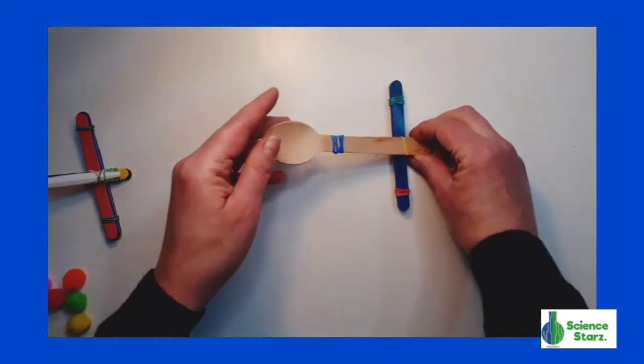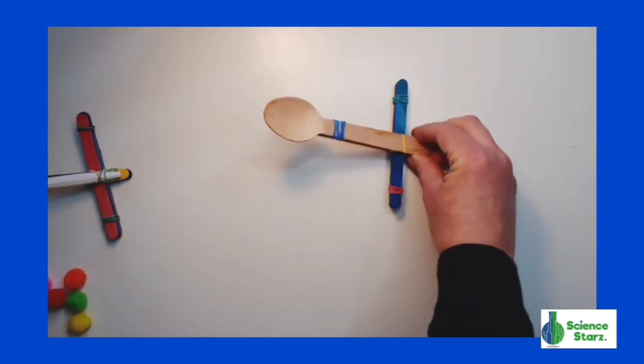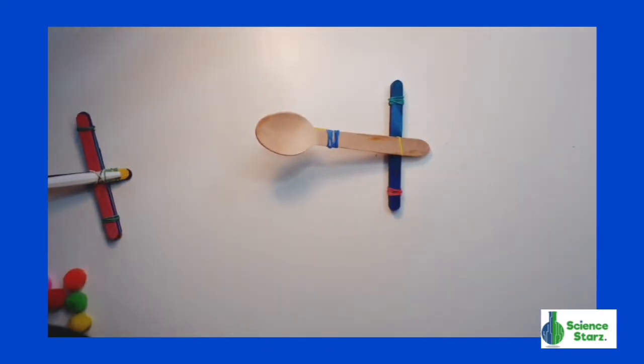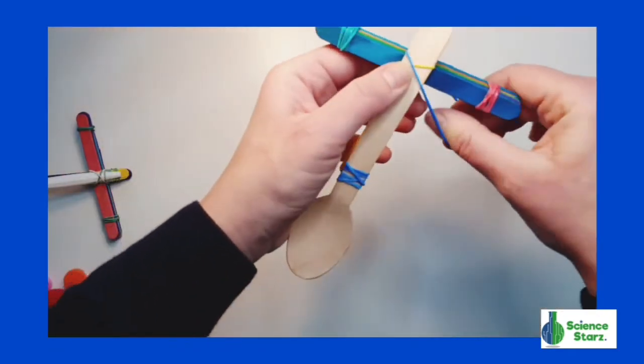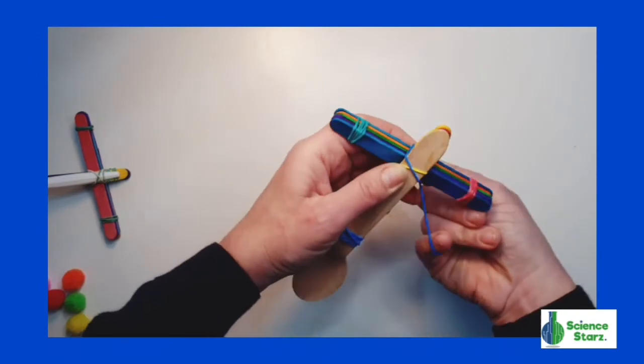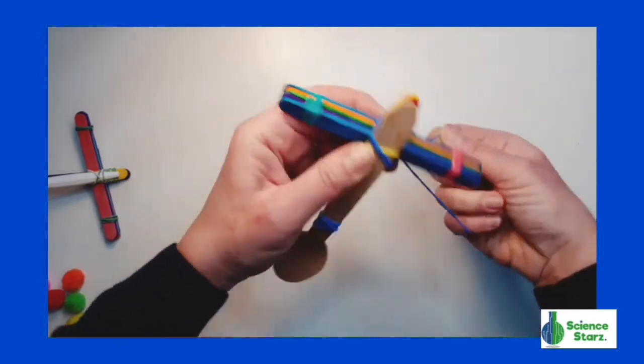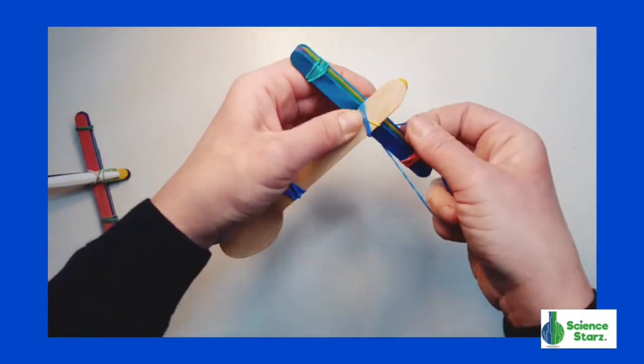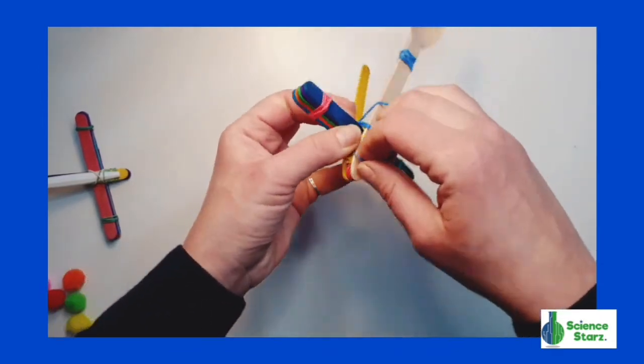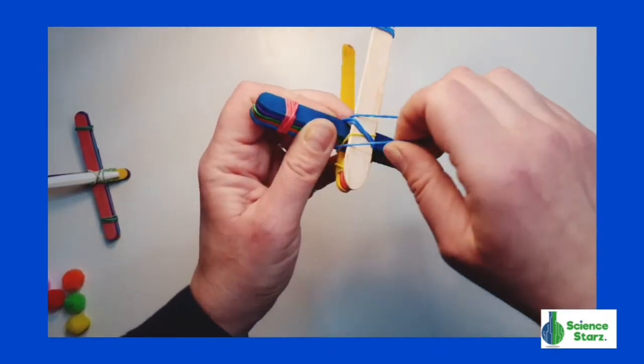I'm going to take one more elastic and I am going to basically do what I did when I was connecting the two stacks of sticks together. So, I'm going to do it diagonally again, wrap the elastic around and then I'm going to twist it around and do it diagonally the opposite way so it ends up looking like an X. It can be a wee bit tricky,